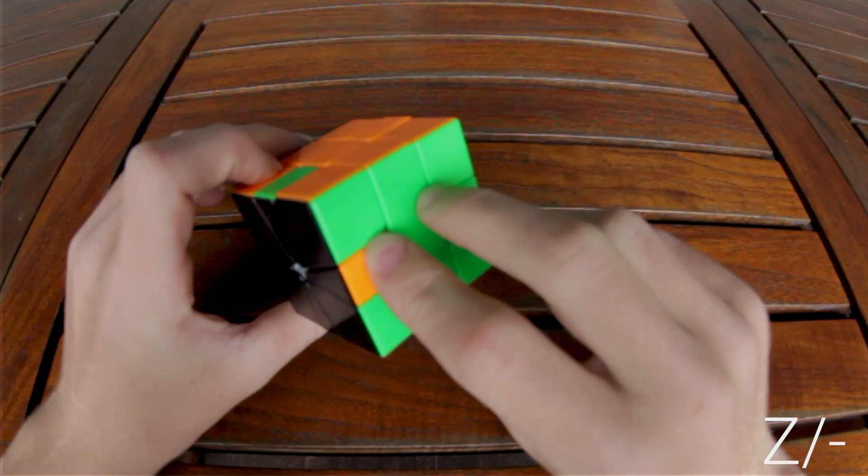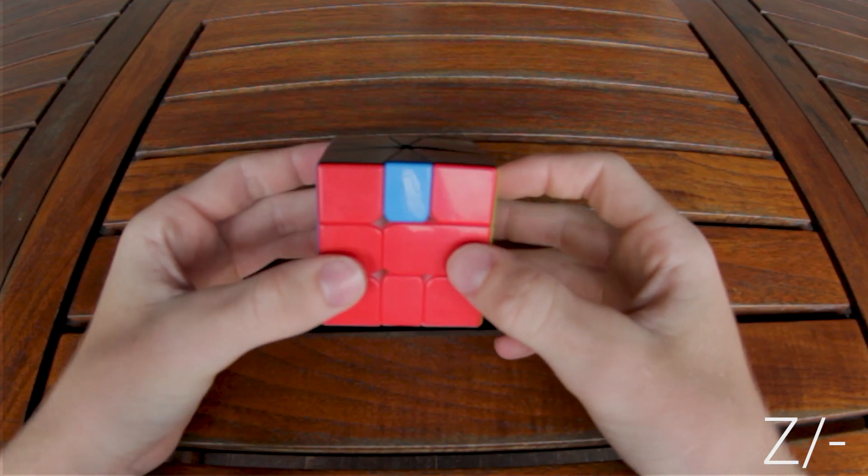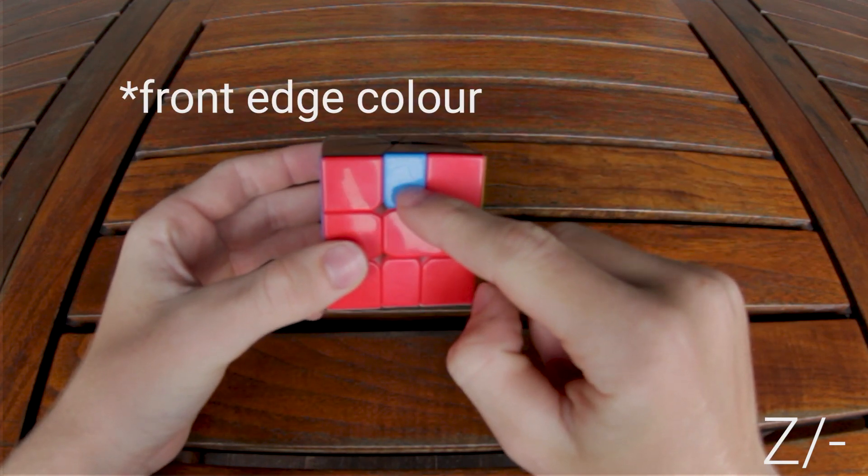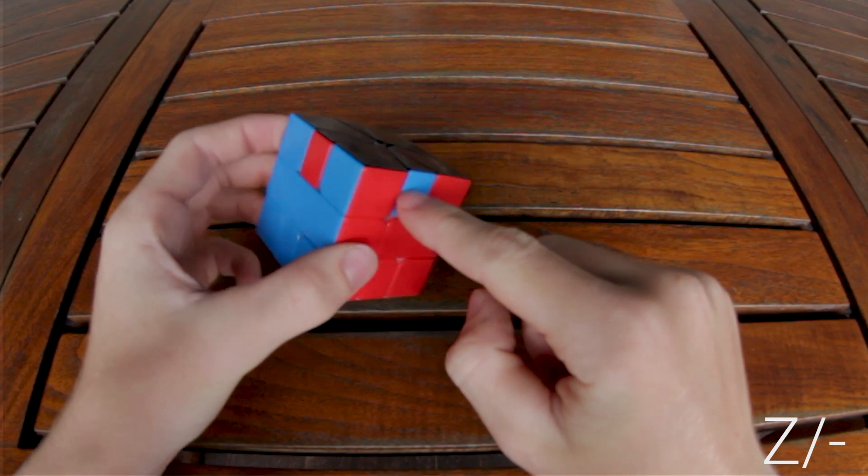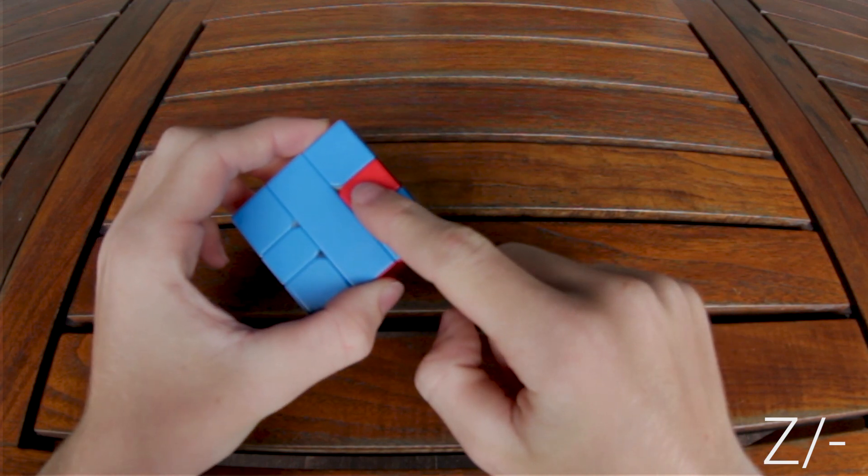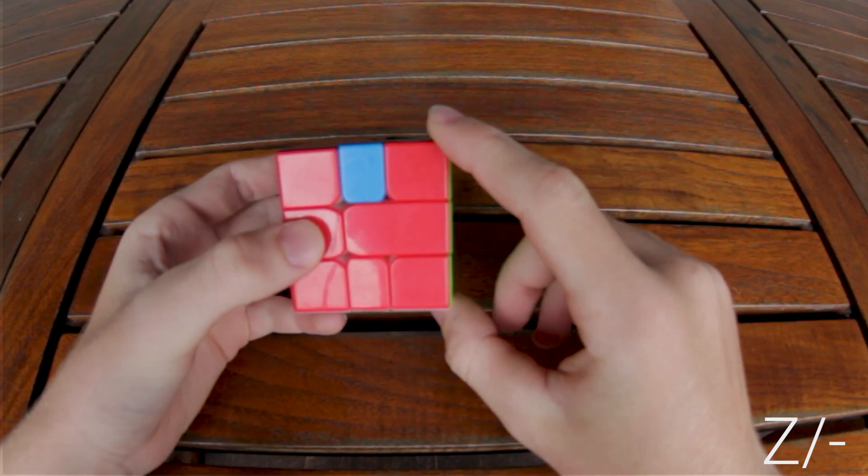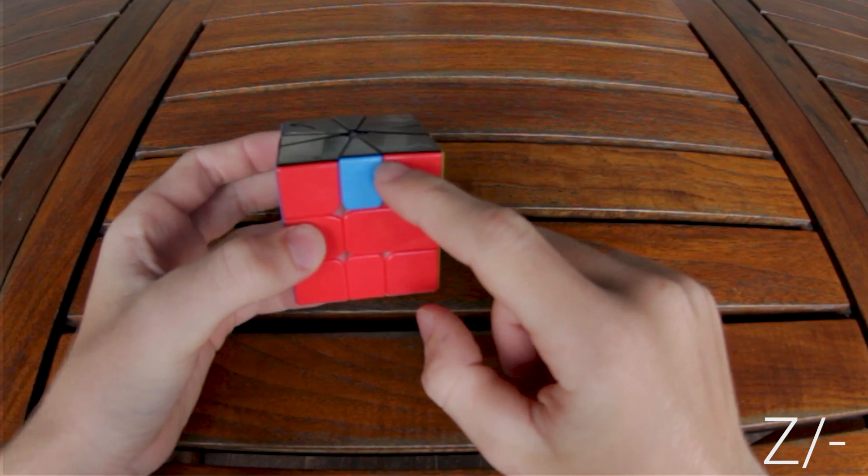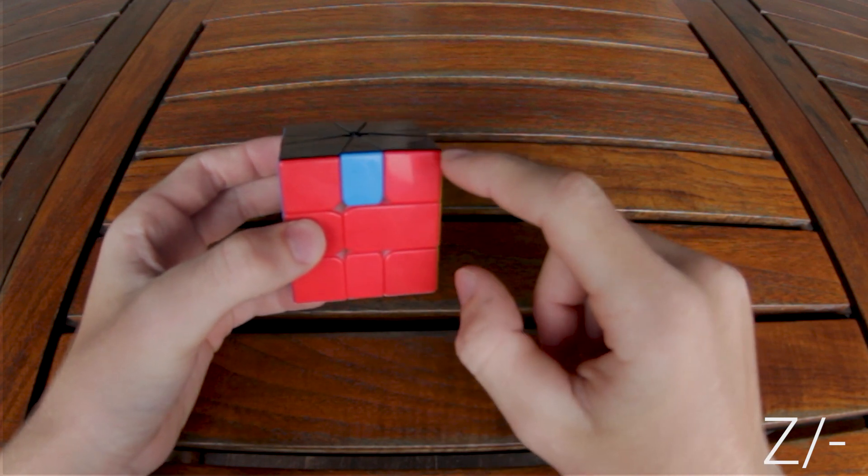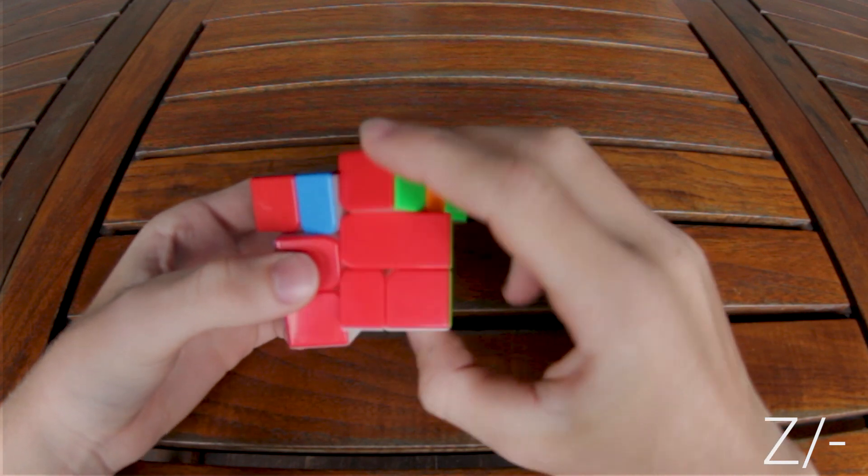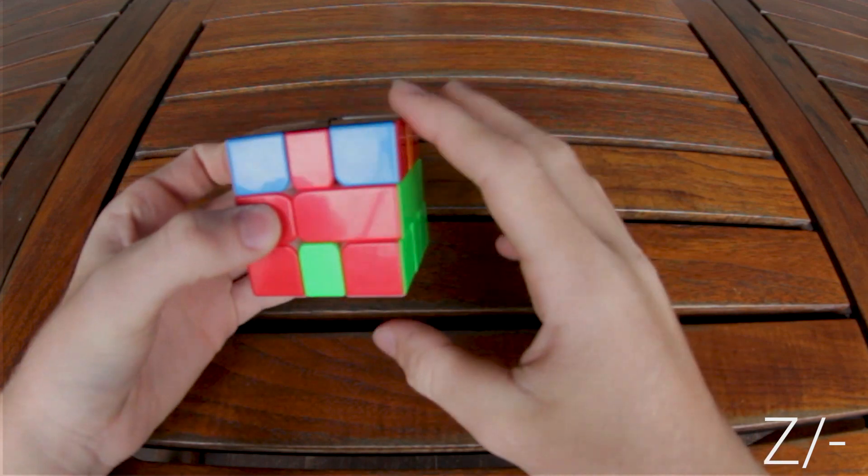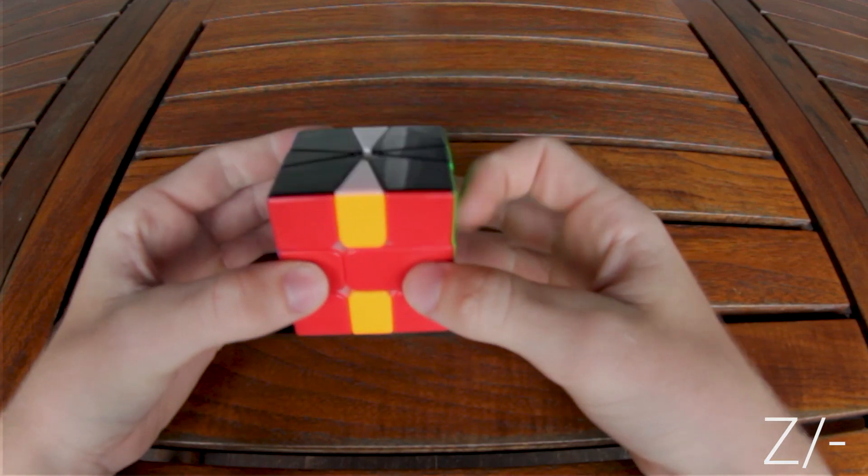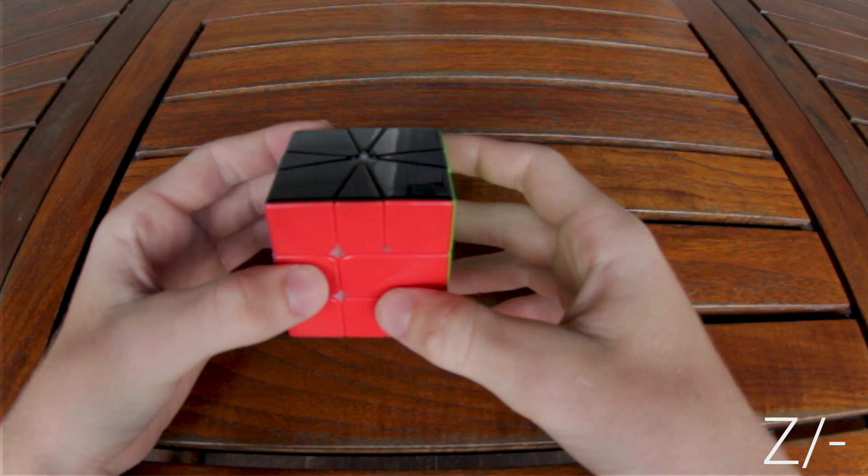The Z perm is also very simple. You look at where the front color needs to go. In this case it's blue. The blue side is on the left, so in that case my U move will have to go to the right, the opposite direction. So I'll do M2, U prime, M2, U, M2, and that solves it.